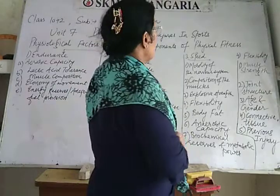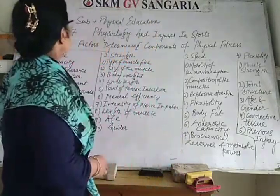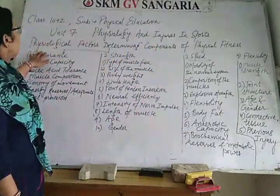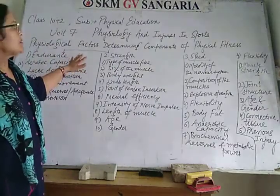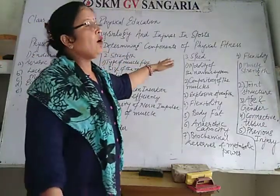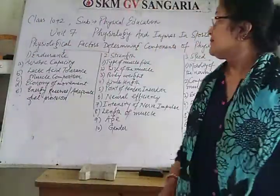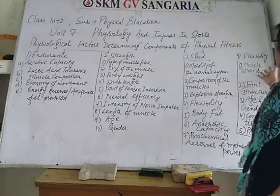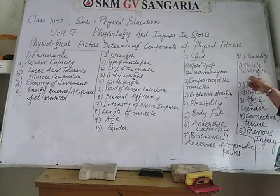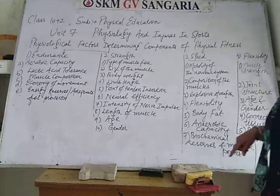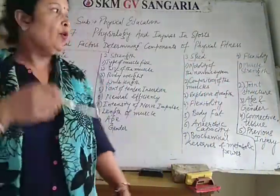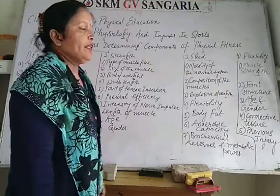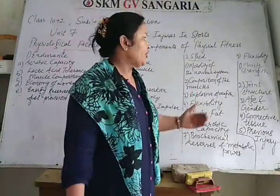So this is about physiological factors determining components of physical fitness. Today you have studied how flexibility is determined by all these factors: first is muscle strength, second is joint structure, third is age and gender, fourth is connective tissue, and fifth is previous injuries.